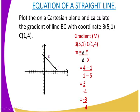The question here is: plot on the Cartesian plane and calculate the gradient of a line BC, with coordinate B at (5, 1) and coordinate C at (1, 4). You are supposed to plot coordinate B, which is at point 5 on the x-axis and point 1 on the y-axis.